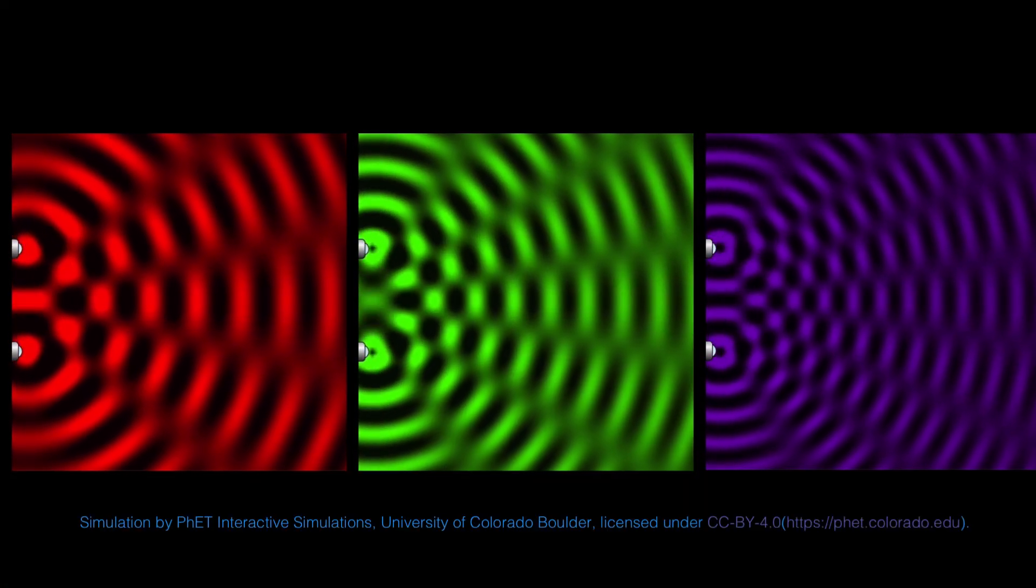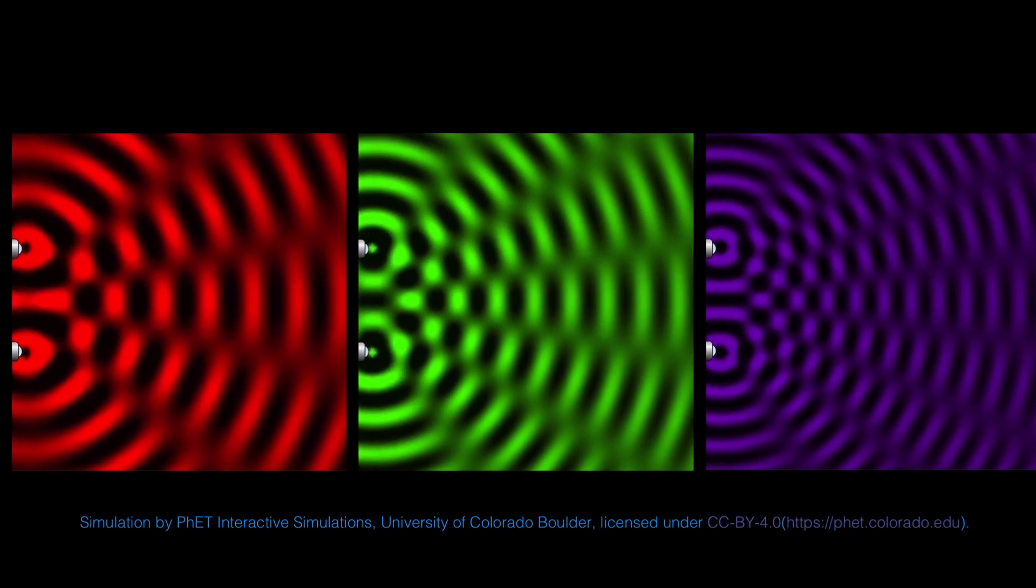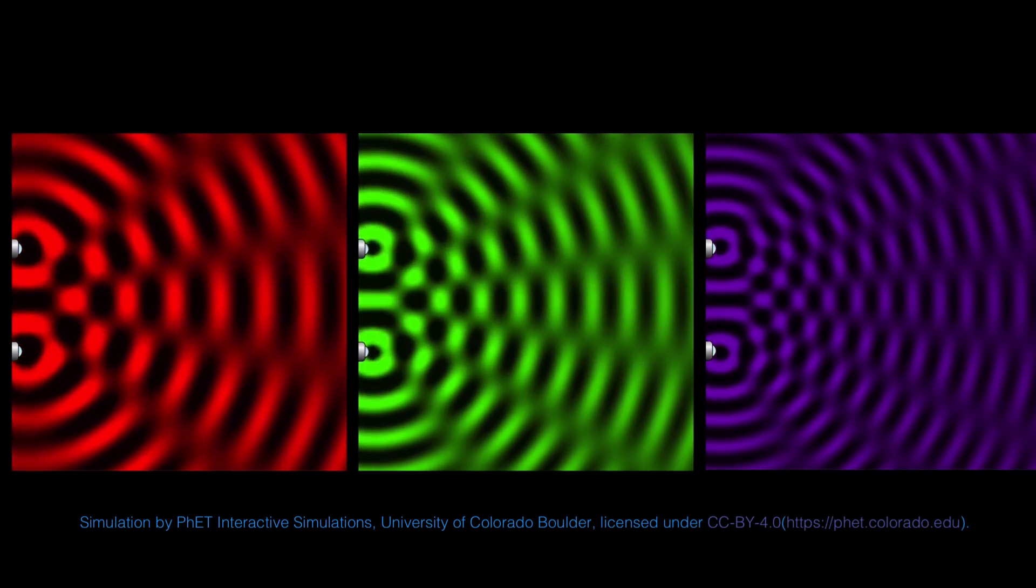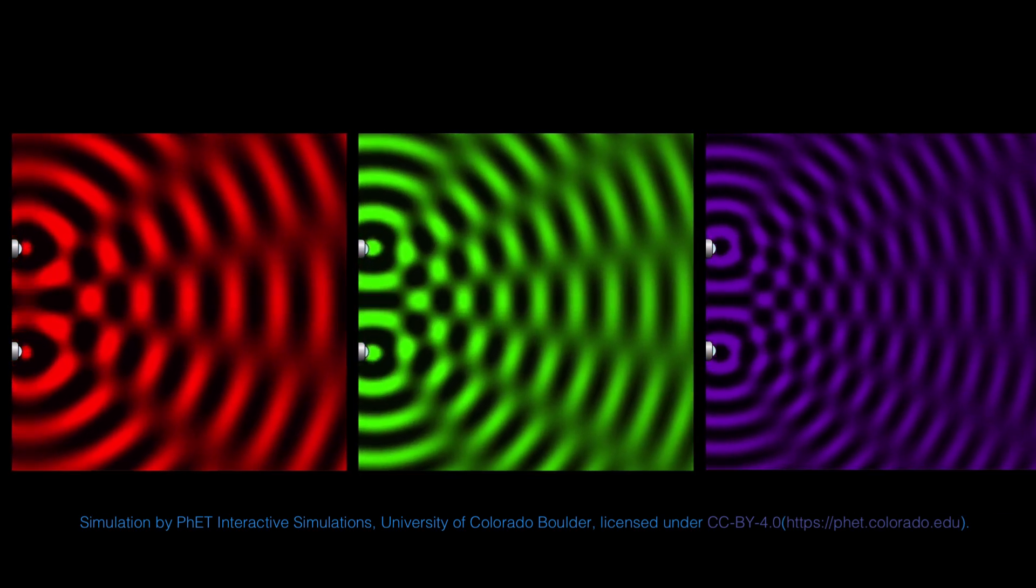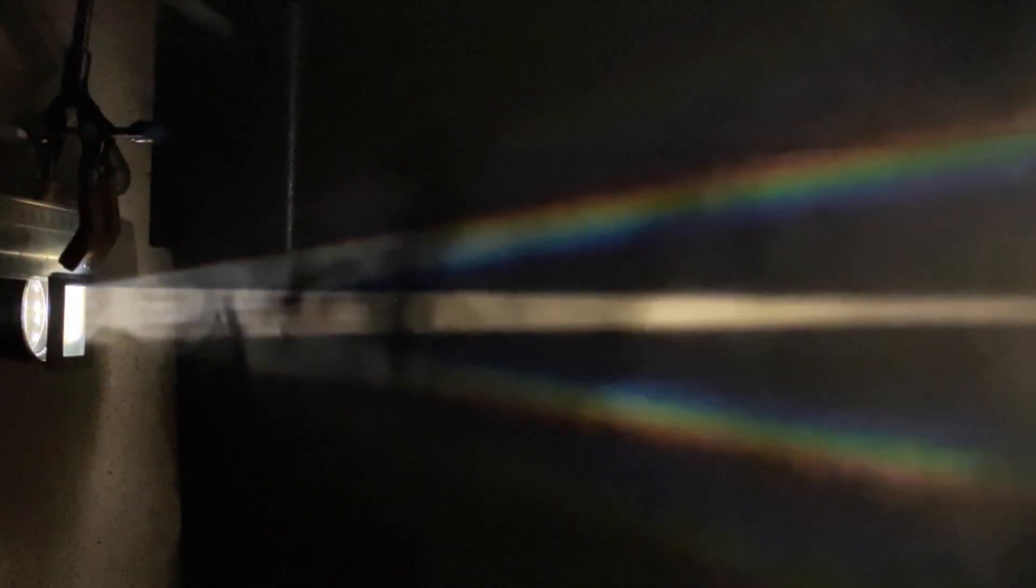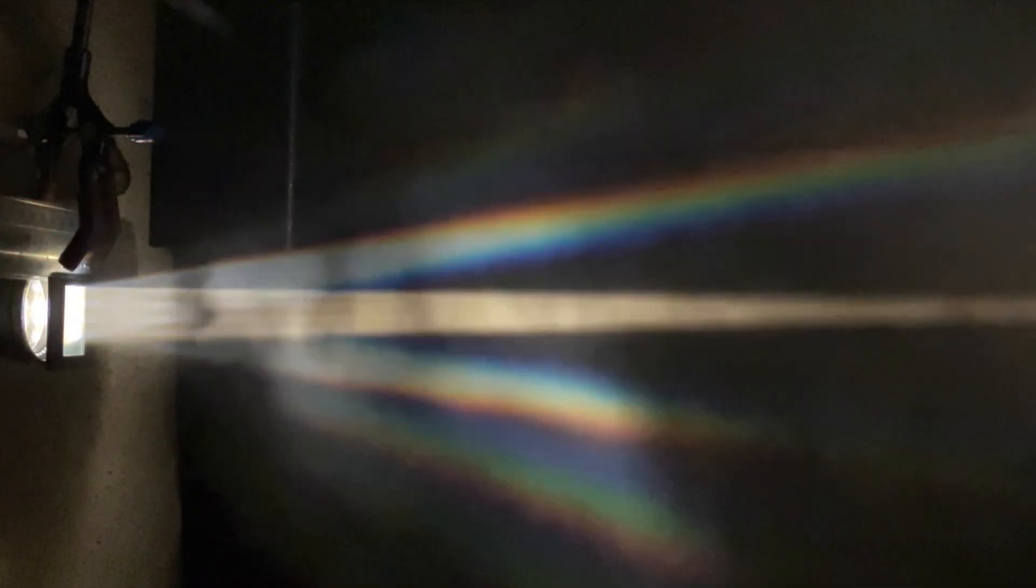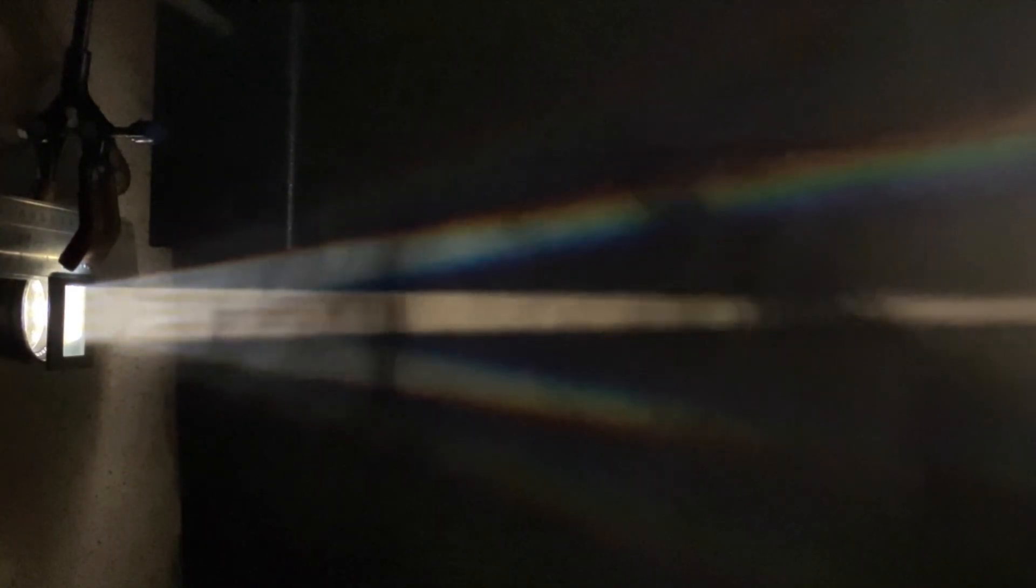We can also see this again in the FET animation. The first-order beam is at the largest angle for red light and the smallest angle for violet light. So because the first-order beams occur at different angles for the different colors, we see spectra in the first-order beam when we use white light.